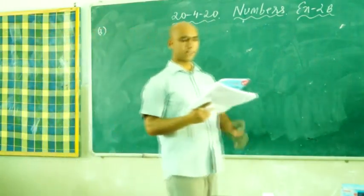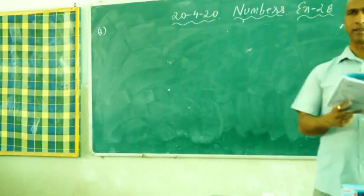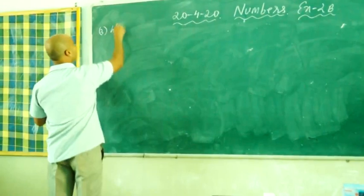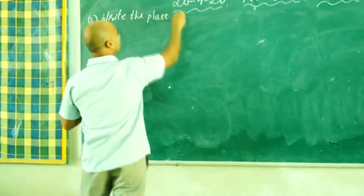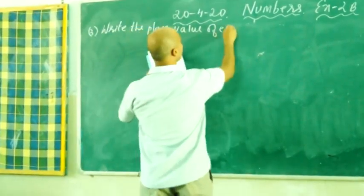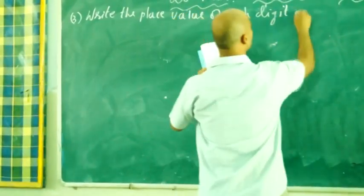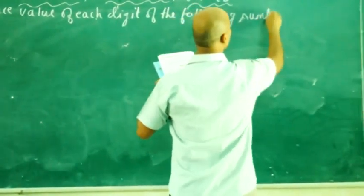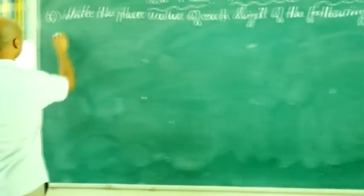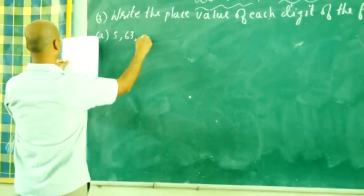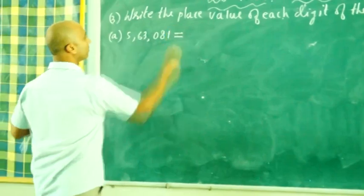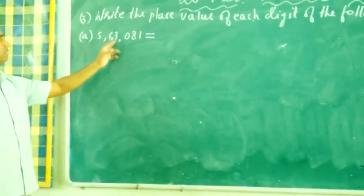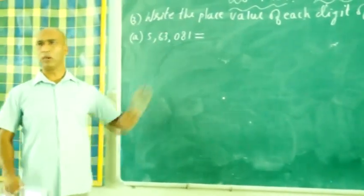Question 3 says, write the place value of each digit of the following. We have to write the place value of each digit, that means all the digits. So this is the number. It says write the place value of each digit of the following digits. That means the number is 563,081. You have to write the place value of all the digits.